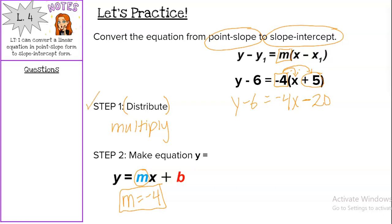So that is step one. Step two is to make our equation y equals. Slope-intercept form starts with y equals. So we want to make that y all by itself by getting rid of this minus 6. So to get rid of the minus 6, we have to undo. So we're going to undo this minus 6 with a plus 6. We do it to one side. We have to do that to the other side.